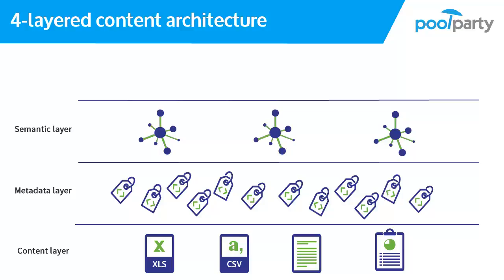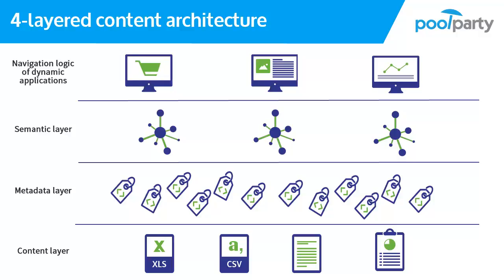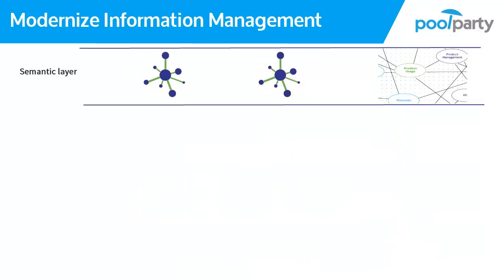To link data across different databases and formats, we have to create a semantic layer. Only then will we be able to use the full data wealth for dynamic applications. Semantic applications are steered by knowledge graphs, and you don't need to go through the hassle of data migration to work with data from different sources, as a semantic layer connects your data silos. A knowledge graph can be developed and maintained separately from the semantic layer, making it easy to include subject matter experts in building the knowledge model without requiring advanced technical skills.